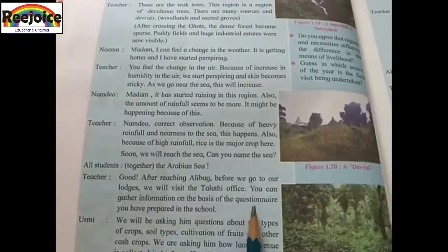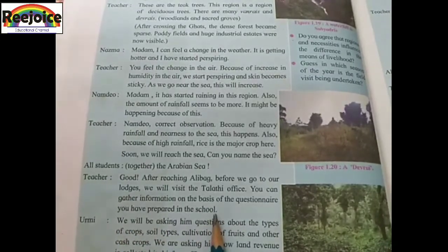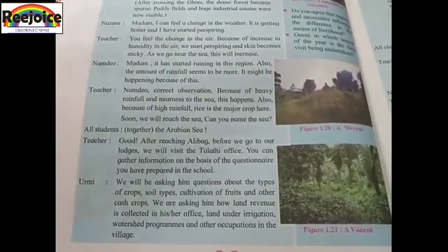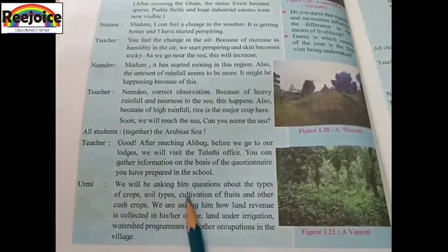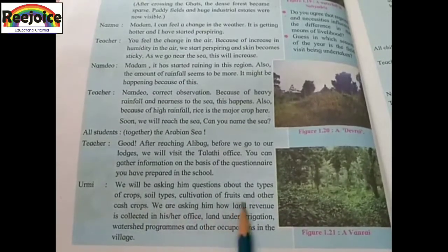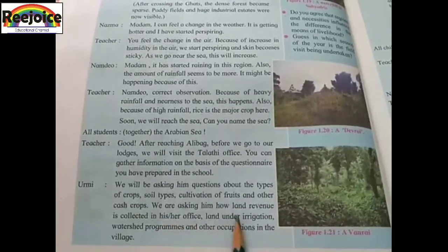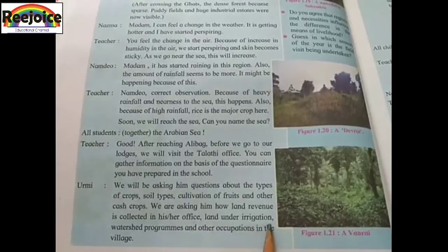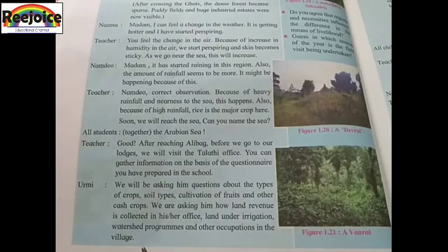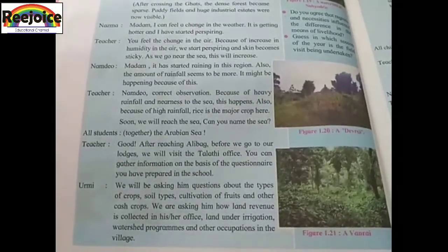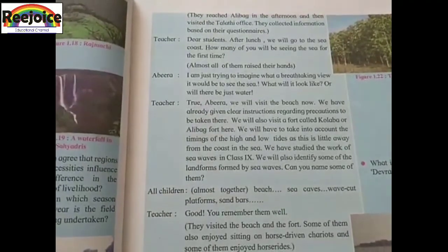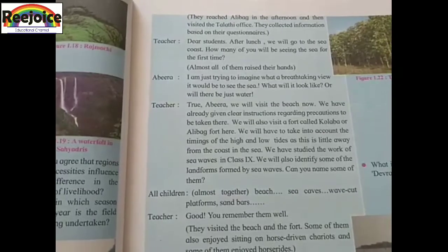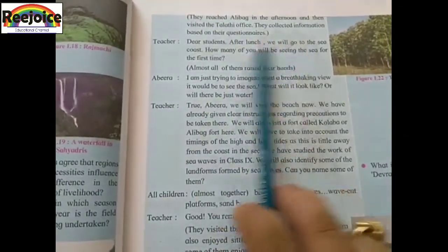You can gather information based on the questionnaire prepared at school. Urmi says, we will be asking questions about the types of crops, soil type, cultivation of fruits and other cash crops, how land revenue is collected, land under irrigation, watershed programs and other occupations in the village. They reached Alibag in the afternoon, visited the Talathi office and collected information based on their questionnaires.